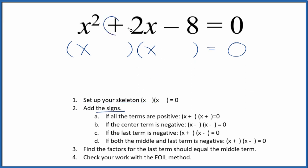Once you have your skeleton, you can add the signs. I see I have a positive and a negative here. If the last term is negative, I'll put a positive and negative in my skeleton equation, like this.